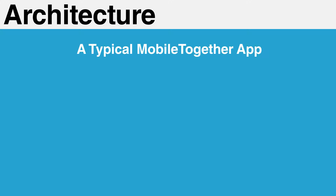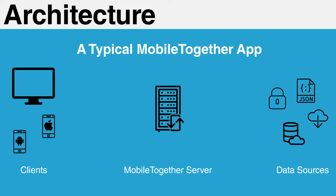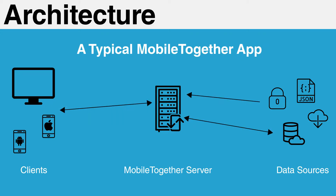Before jumping into configuration, it helps to understand how MobileTogether works. A typical app will consist of three main parts: a MobileTogether server, several MobileTogether clients, and back-end data sources such as SQL databases and JSON APIs. A client running a MobileTogether app will make a request to an instance of MobileTogether server running on-premise. The server handles all permissions and authentication as well as making requests to any relevant back-end data sources. It then sends a payload of data back to the client, which renders a mobile app on the user's mobile device. All communication happens via MobileTogether server — the client app never actually touches your back-end data sources directly.